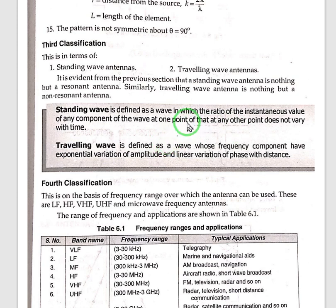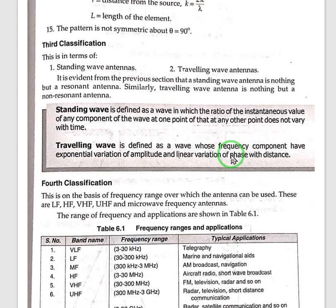Travelling waves are defined as waves whose frequency components have exponential variation of amplitude and linear variation of phase with distance. That means travelling waves are waves which are travelling from the source to the destination. Always remember that if the reflected wave and the incident wave coincide and their values are the same, the transmission gets stuck — and the phenomenon that occurs is called the standing wave. These standing waves are dangerous for the transmission.